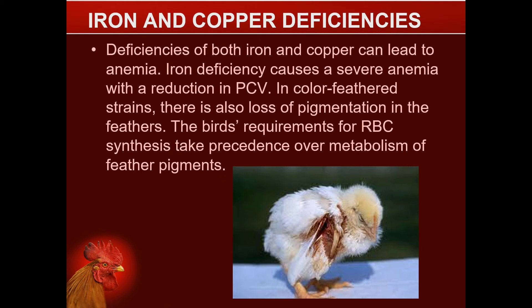Iron and Copper deficiencies: deficiencies of both iron and copper can lead to anemia. Iron deficiency causes severe anemia with a reduction in PCV. In color-feathered strains, there is also a loss of pigmentation in the feathers, as the bird's requirement for red blood cell synthesis takes precedence over metabolism of feather pigments.